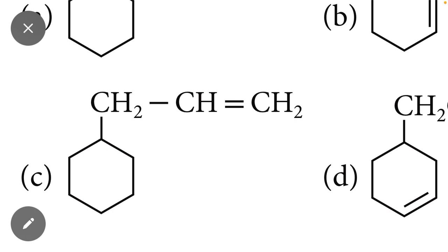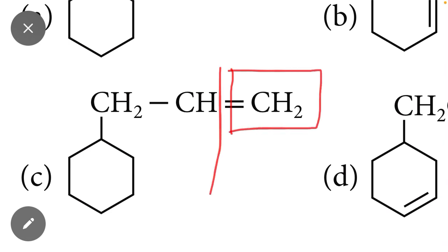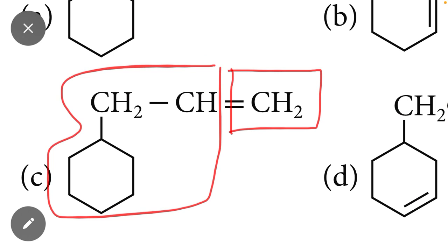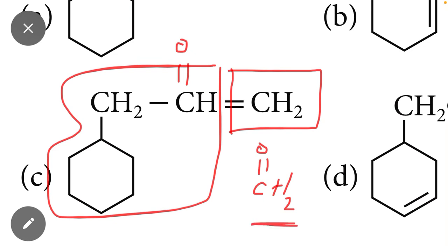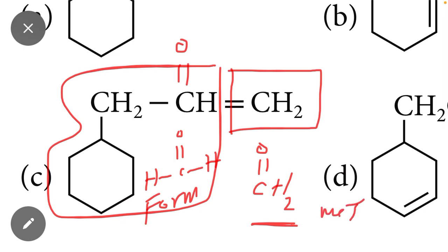After breaking the bond, we have two portions: CH₂ on one side, and similarly on the left side. After breaking the bond, we add a double bond O (C=O) on both sides. After adding C=O, we can see that this molecule is H₂C=O — which is formaldehyde, also called methanal.